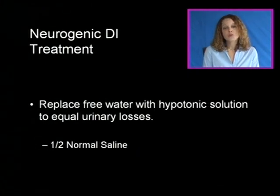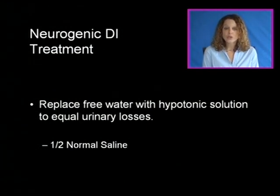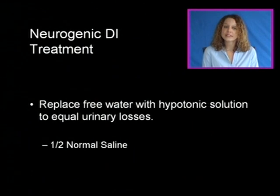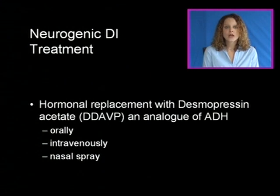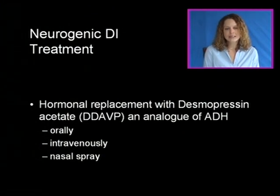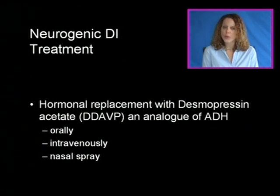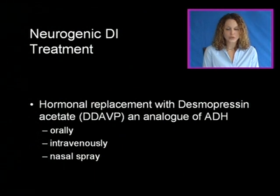Treatment for neurogenic DI includes replacing free water with hypotonic solution to equal the urinary losses. Half-normal saline is often ordered for fluid replacement. Hormonal replacement with desmopressin acetate, or DDAVP — an analog of antidiuretic hormone — may also be used, and can be given orally, intravenously, or by nasal spray.